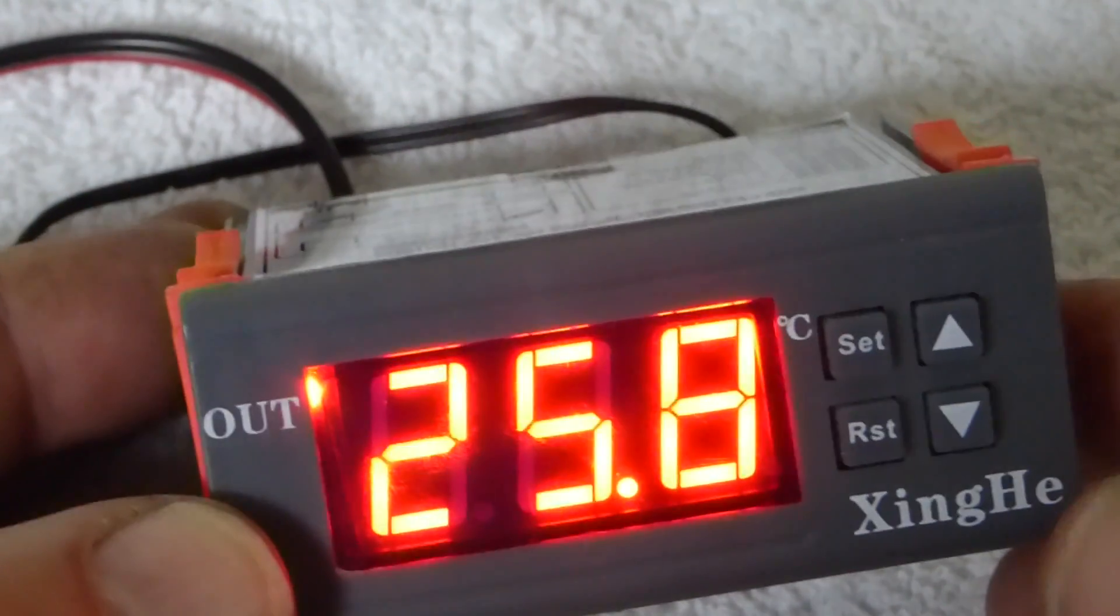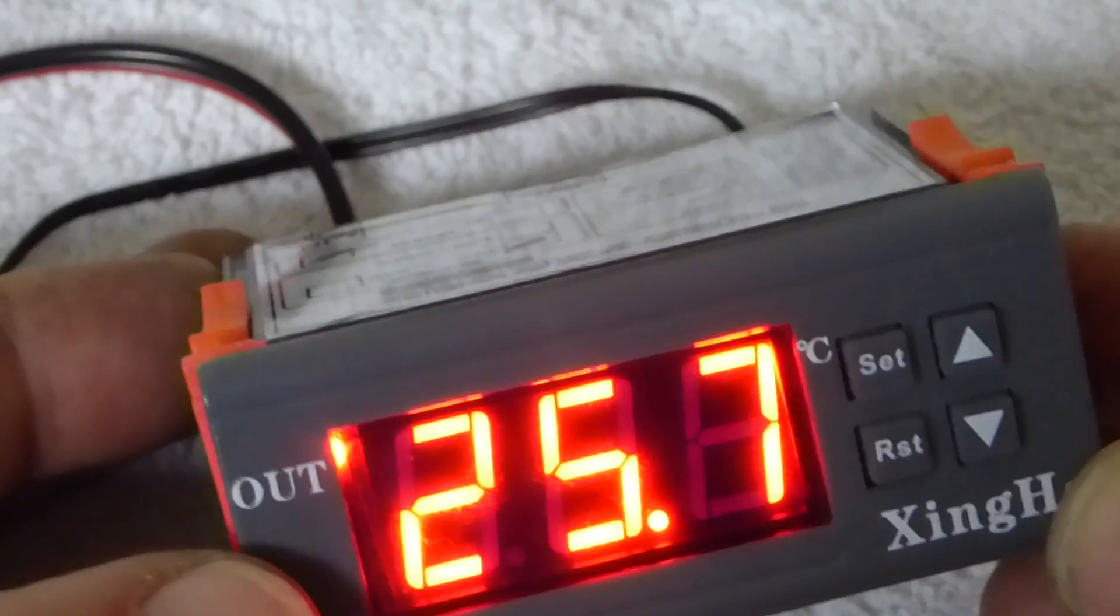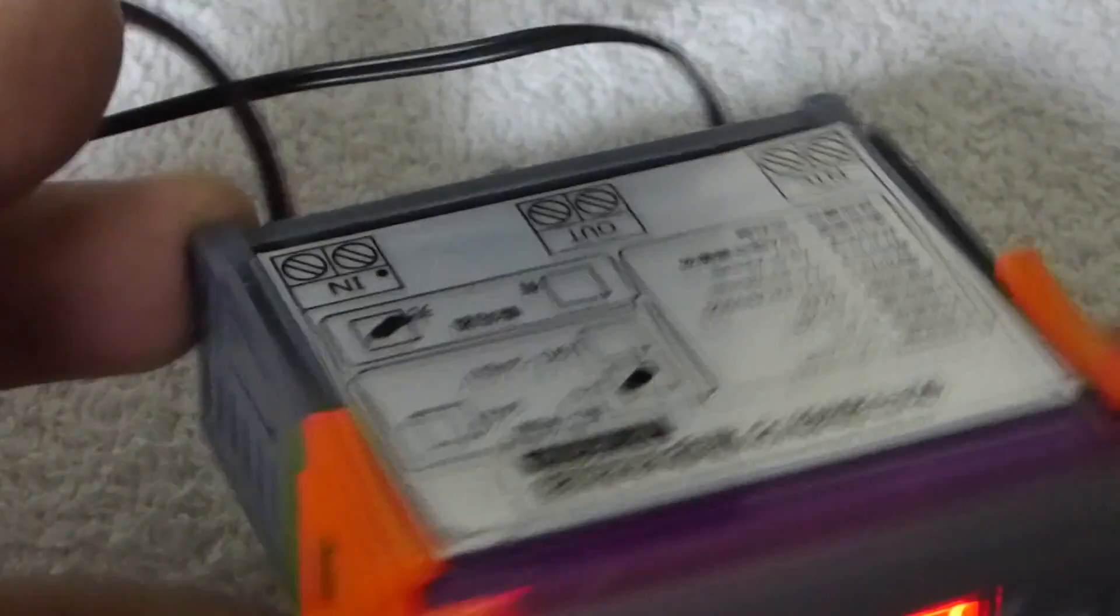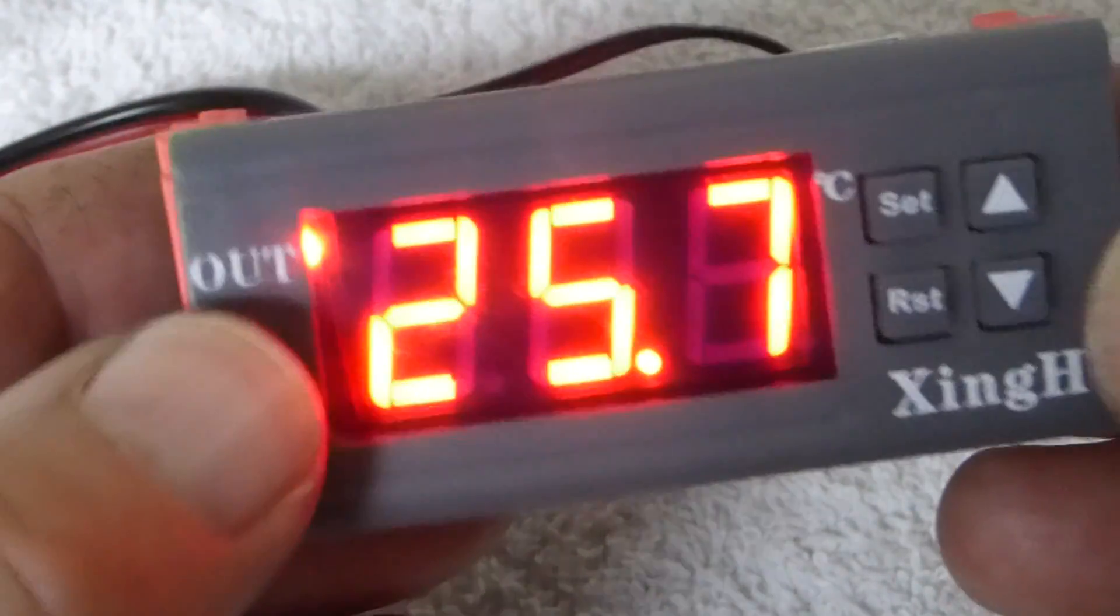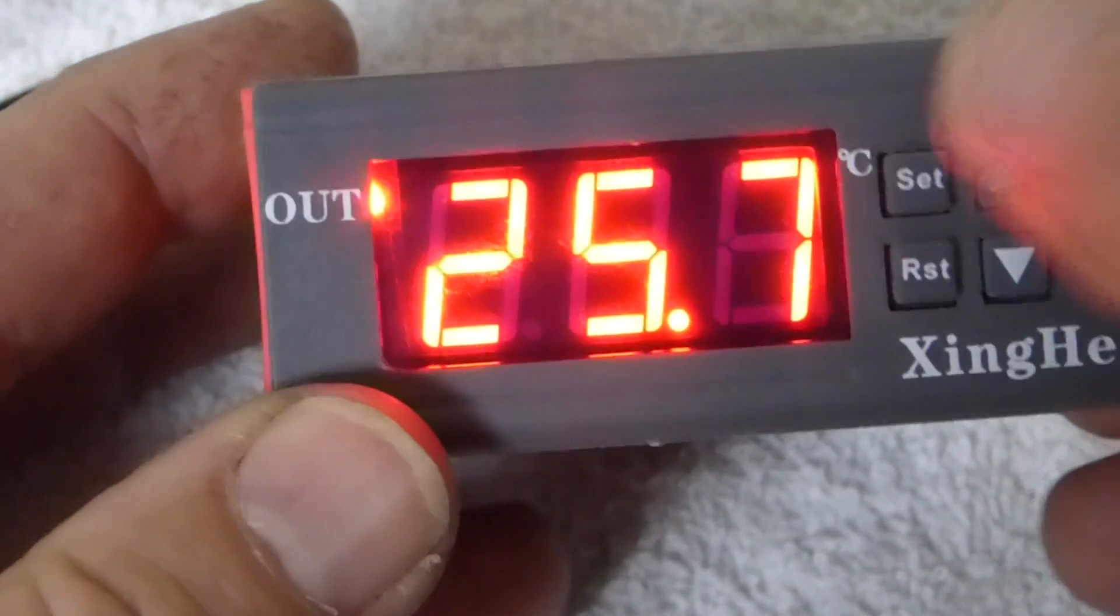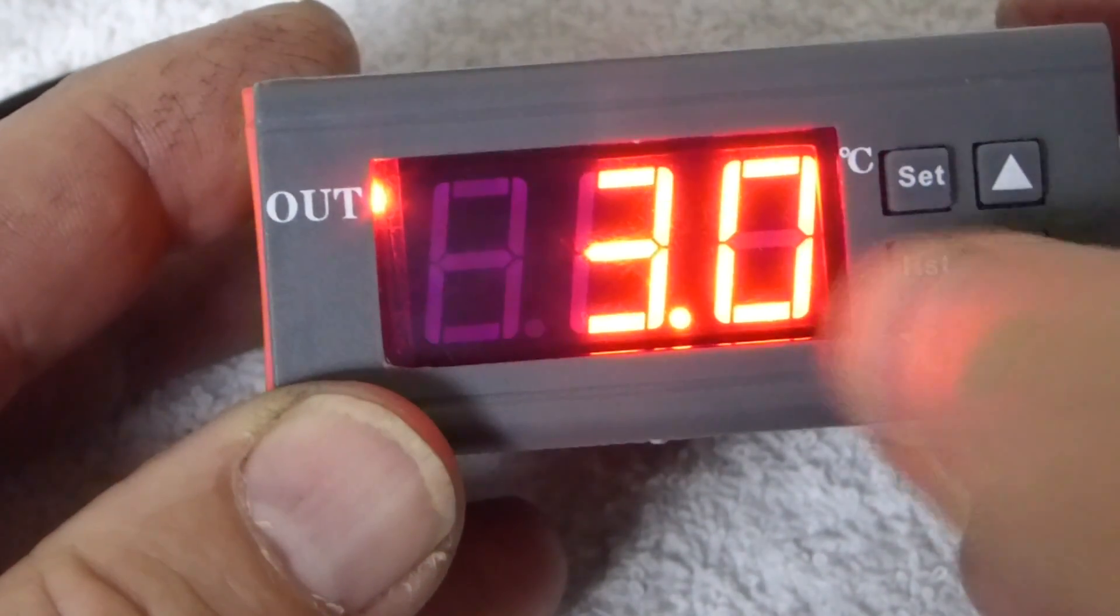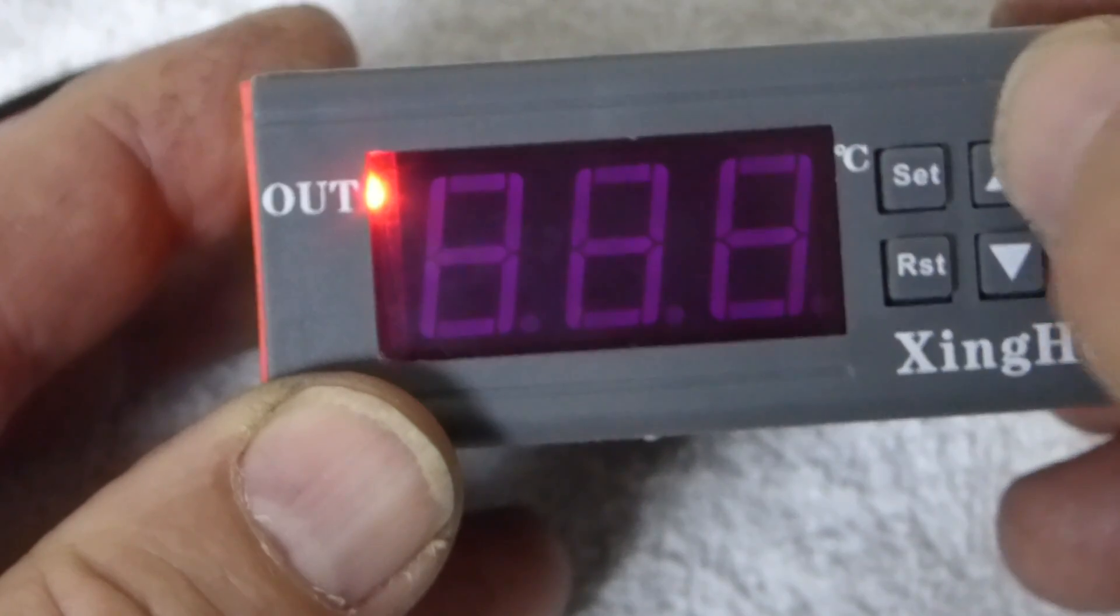Hi, I just want to show you how to program our 12 volt digital fridge controller, that's the one there. All you need to do is press the set button and the temperature will flash. That's the temperature you want the compressor to turn on at.